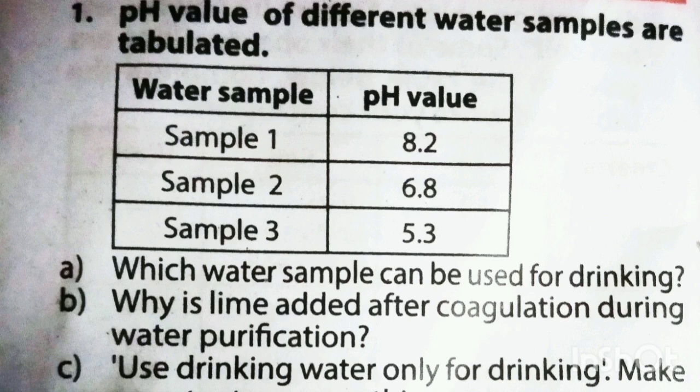Why is lime added after coagulation during water purification? Lime is added to regulate the pH value of water. That is the answer.